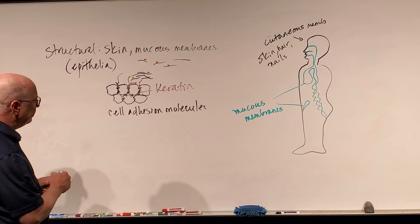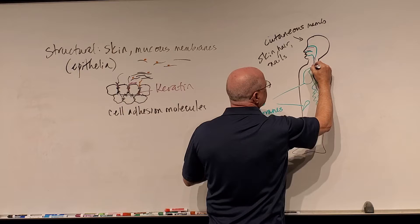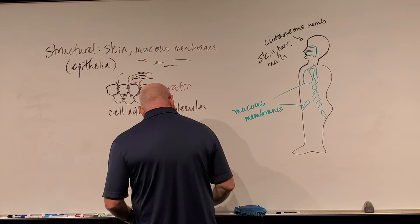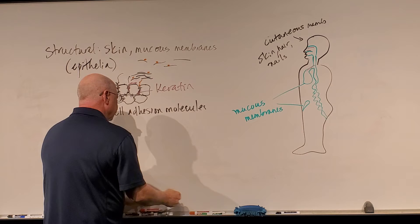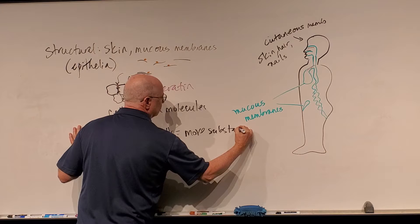Some of our cells — particularly in the mucous membranes, and in the trachea and part of our respiratory passages — are ciliated. These ciliated cells move substances along.